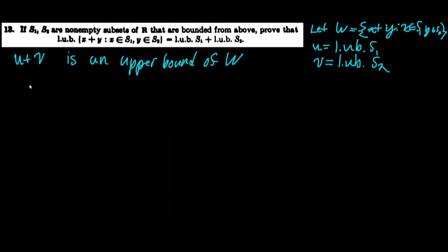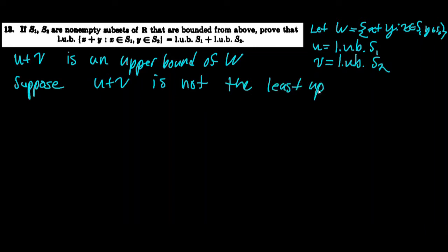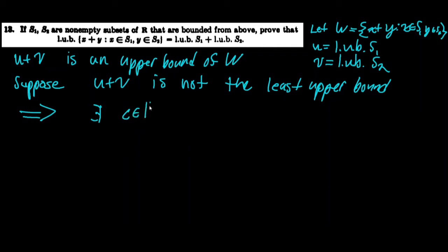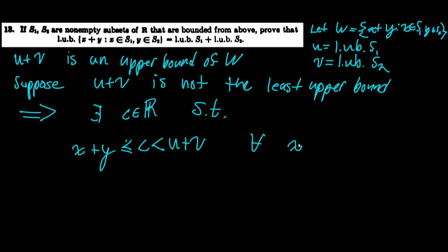We'll prove this by contradiction. Suppose u + v is not the least upper bound. Then there exists a c in ℝ such that c < u + v, and c is an upper bound of W — meaning c ≥ x + y for all x in s1 and y in s2. Our goal is to prove this statement (call it ★) leads to a contradiction.